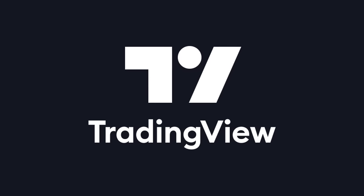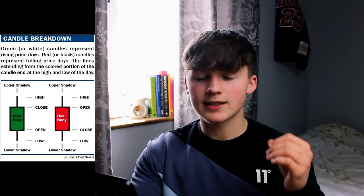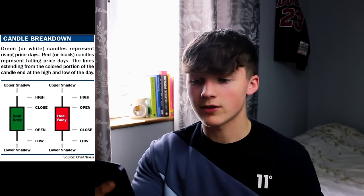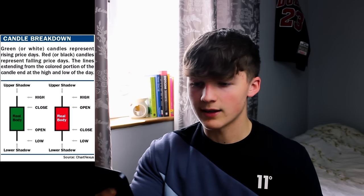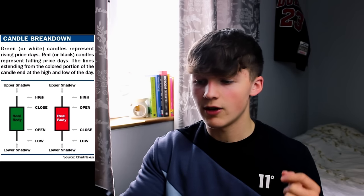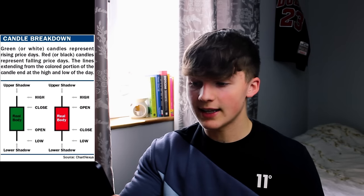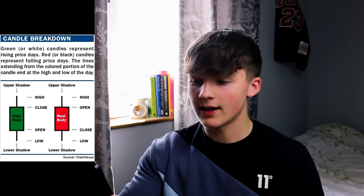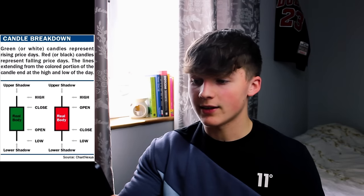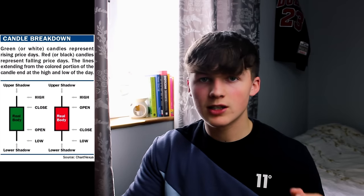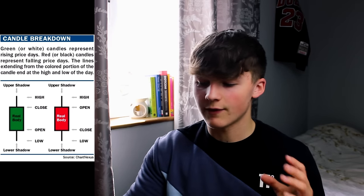If you want to trade on TradingView or other charts, they're most likely going to be red and green. So here's the simplest candlestick breakdown I have on screen: green or white candles represent rising price days, red or black candles represent falling price days. The lines extending from the colored portion of the candle end at the high and low of the day. This is what really gave me a good explanation of candlesticks and it actually helped me a lot.